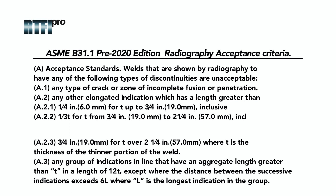A.1: Any type of crack or zone of incomplete fusion or penetration. A.2: Any other elongated indication which has a length greater than — A.2.1: 1¼ inch (6mm) for T up to ¾ inch (19mm) inclusive.